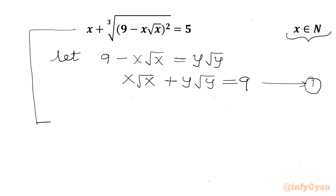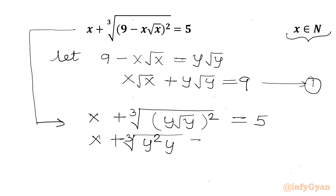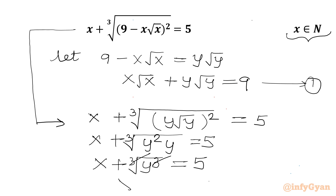After substitution, the original equation becomes x plus cube root of (9 minus x root x), which is y root y, whole square, equal to 5. Since y root y whole square is y cubed, we get x plus cube root of y cubed equal to 5. The cube root and cube cancel, giving x plus y equal to 5. Let us call this equation 2.